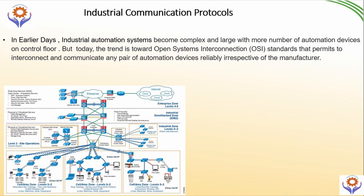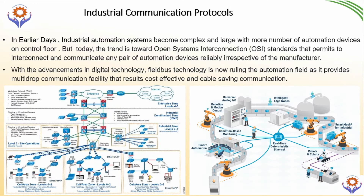Now we will move to the earlier stage. In earlier days, industrial communication systems had become very complex and large with more automation devices on the control floor. But today the trend has changed because all communication protocols have become open systems — that is called Open System Interconnection, OSI standards — which permits interconnecting communication between any automation device from any manufacturer very easily.